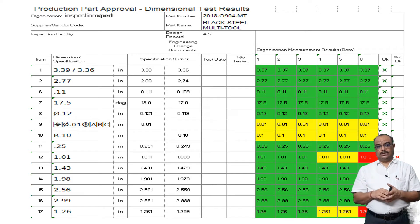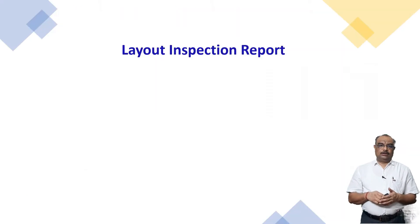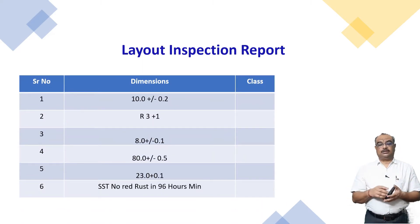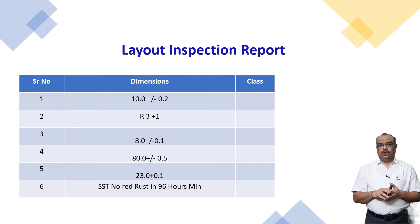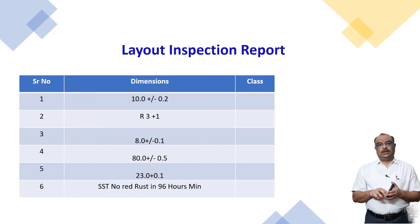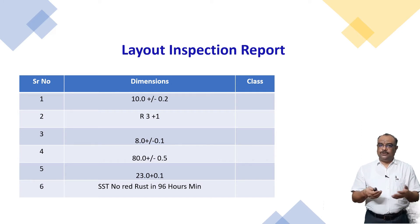But there is one more method — a best practice — which we can use for the layout inspection report. In layout inspection, there are three important pieces of information: first is the dimension itself; second is whether this dimension is critical, major, or minor. If we define critical, major, and minor, our focus will change and we can see the risk. Some dimensions are normal, but some are critical and require special focus.